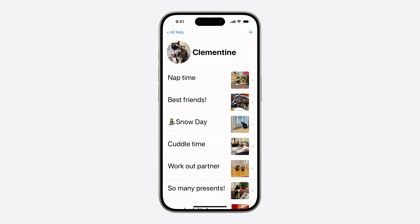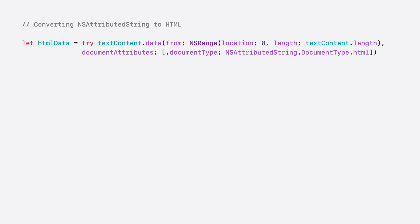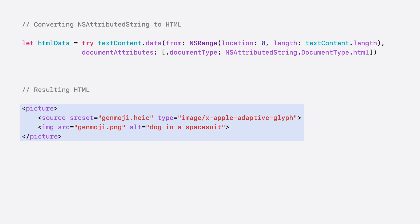But what about that web interface I mentioned before? It couldn't be easier. To display the image in HTML, use the same dataFromRange method we used earlier to convert to RTFD, except this time we'll request the HTML document type. This will emit cross-compatible HTML, so advanced engines that support the Apple adaptive glyph type, such as WebKit, will display the image inline with text as if it were a standard emoji. For engines that don't support image glyphs, a fallback image will be displayed instead. The alt text is sourced from the NSAdaptiveImageGlyph's content description and will be applied no matter which source is ultimately displayed in the browser.